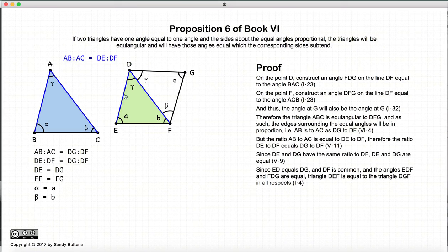Now we have that DE is equal to DG and DF is common. There are two angles that are the same. So according to Proposition 4 of Book 1, these two triangles are equivalent. So DGF and DEF are equivalent. And if they are equivalent, that means that they are also equal angular, which means that A is equal to alpha and beta is equal to B.